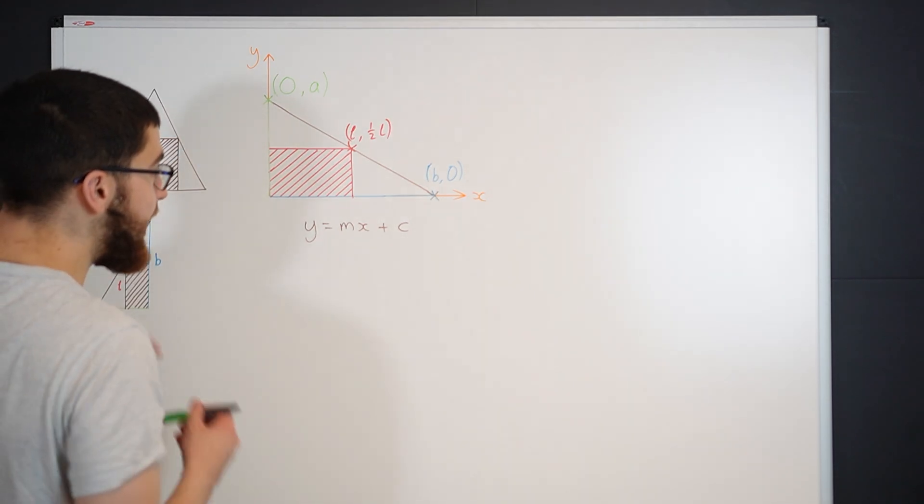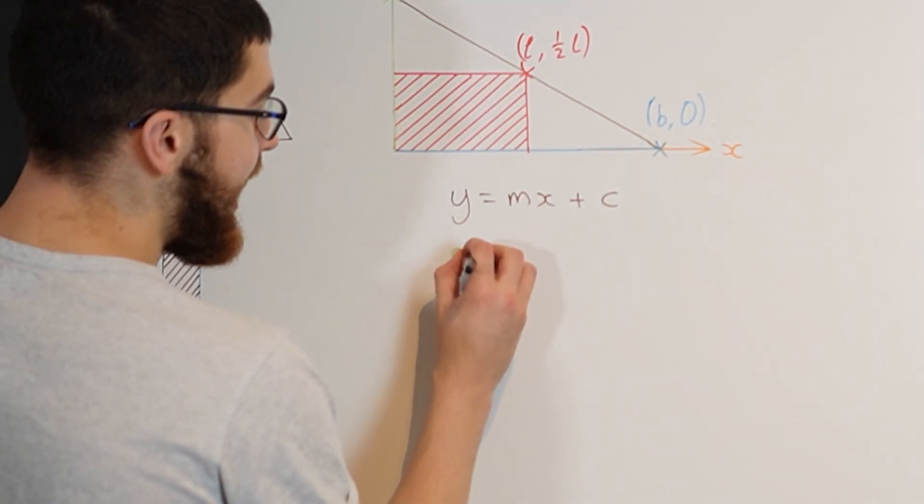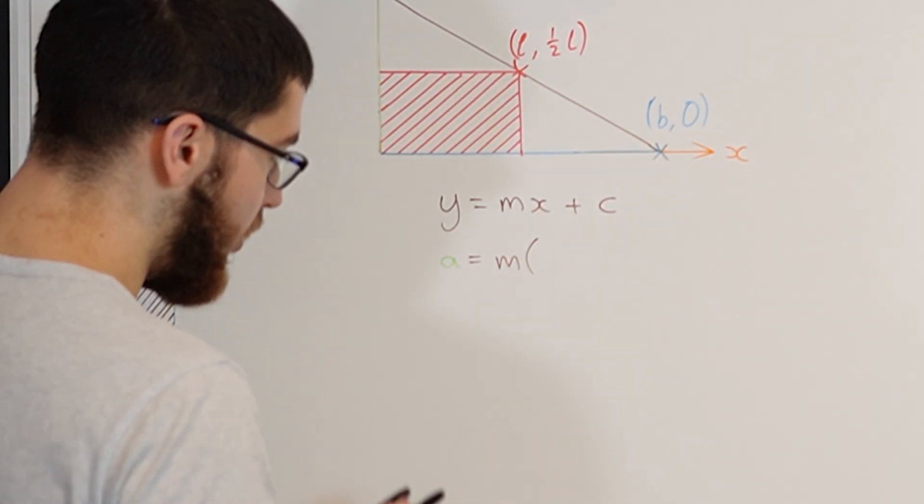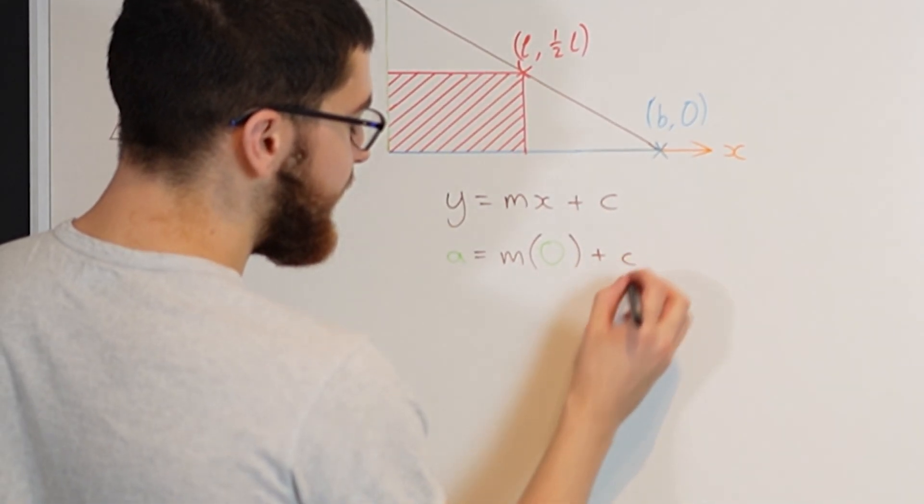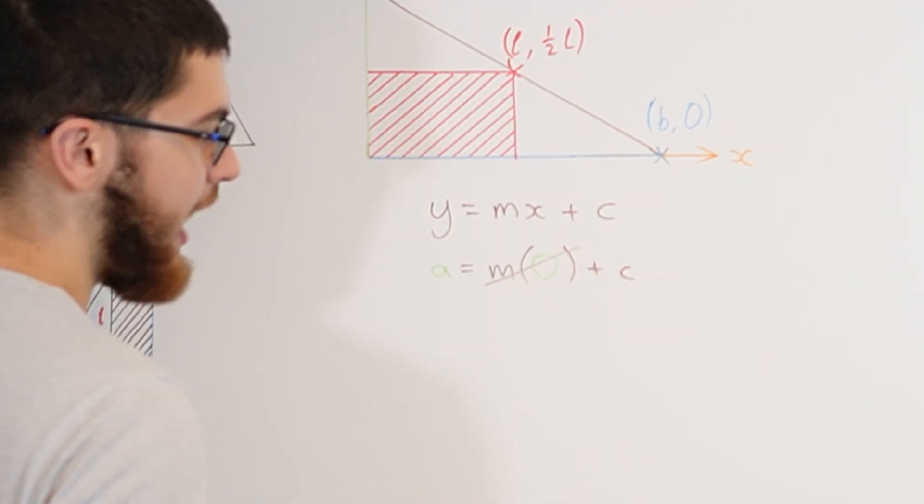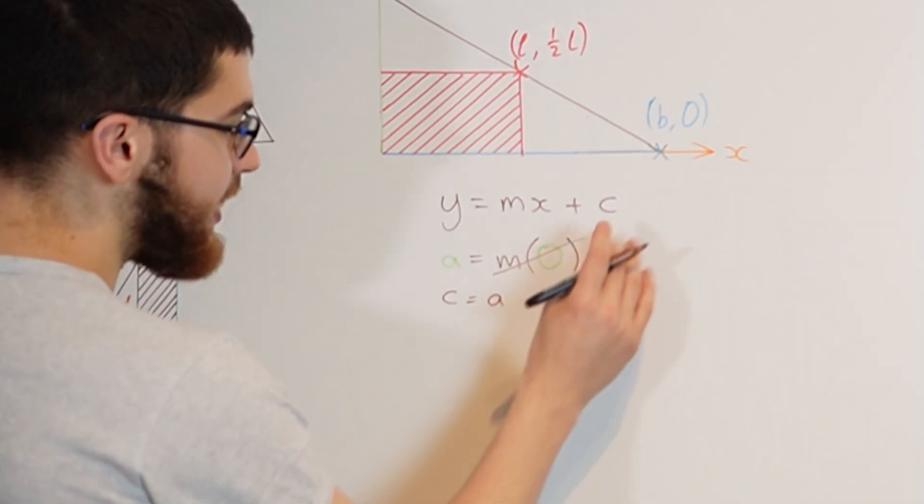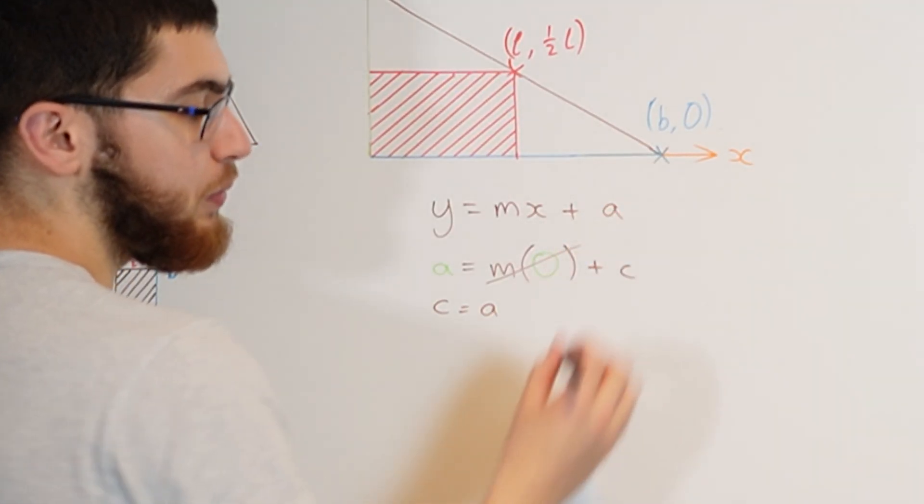So using this first point A, we've got Y equals A, M we don't know yet, and X is equal to 0 plus C. We can rearrange this because the 0 cancels that out. We've got A equals C so C is simply just A. So we can change this to Y equals MX plus A.